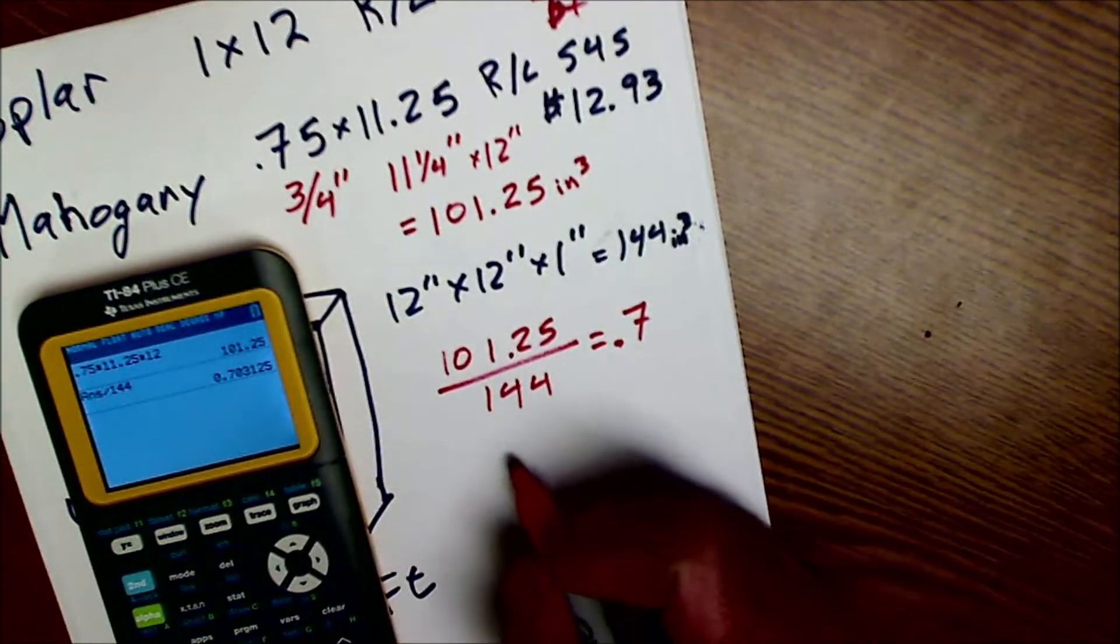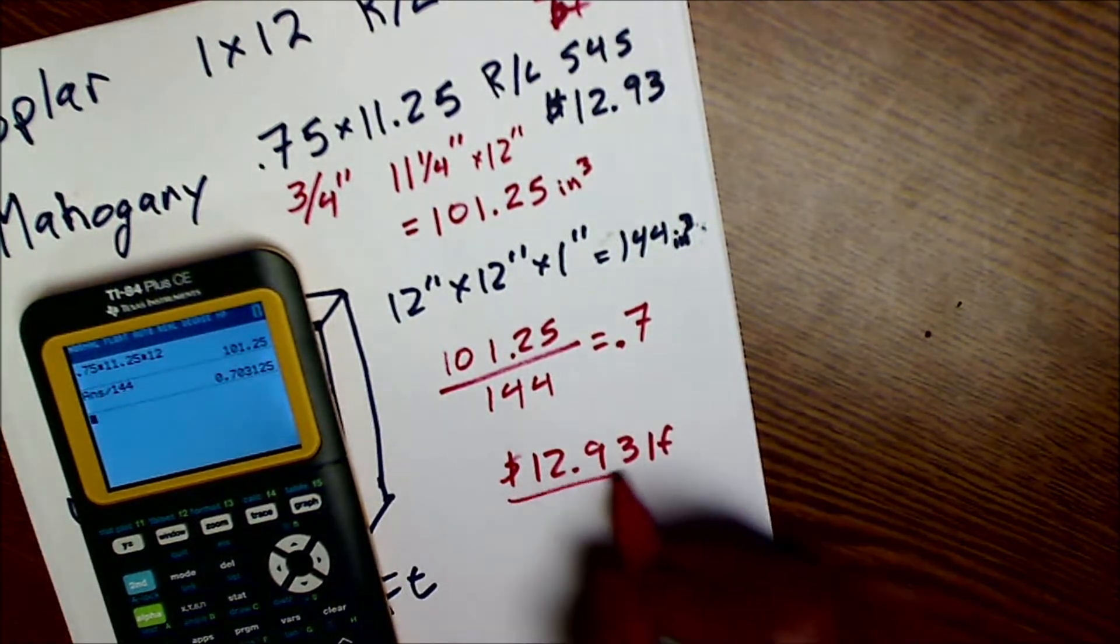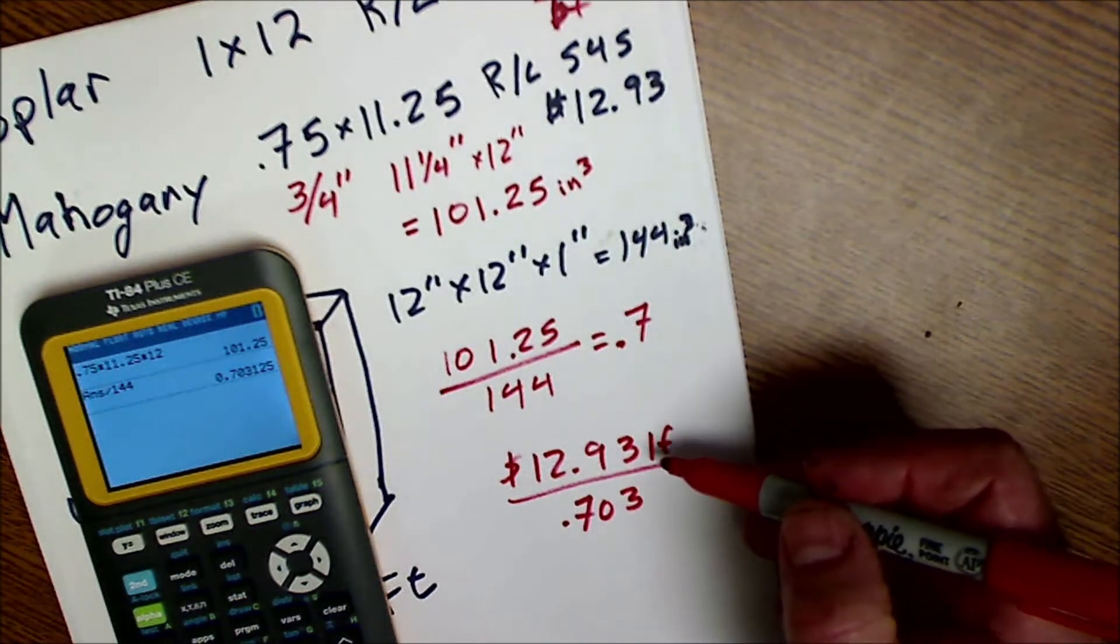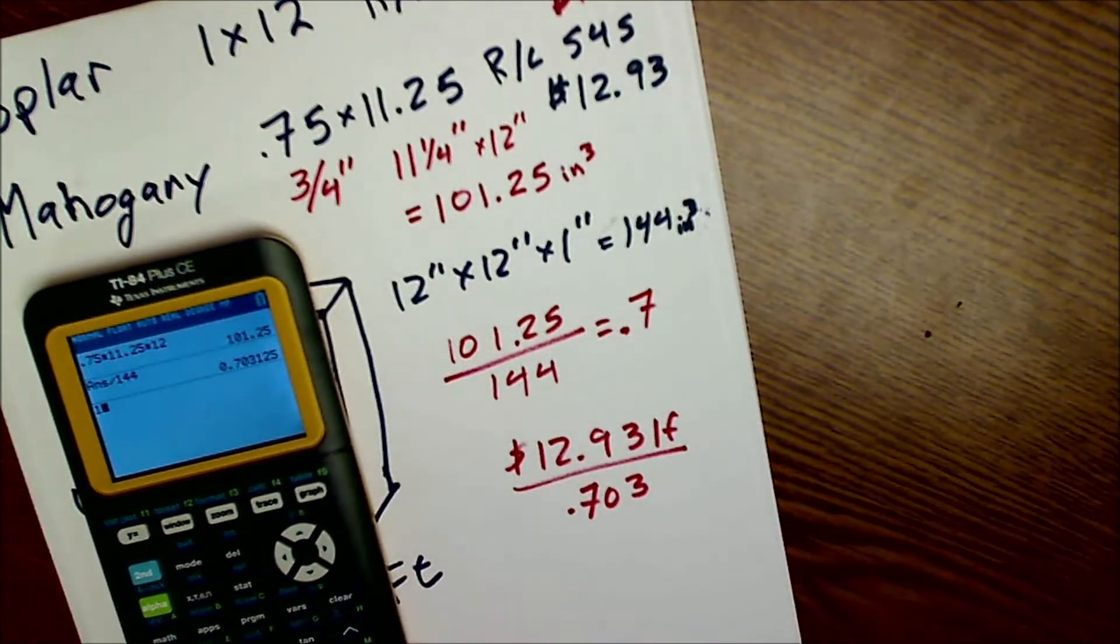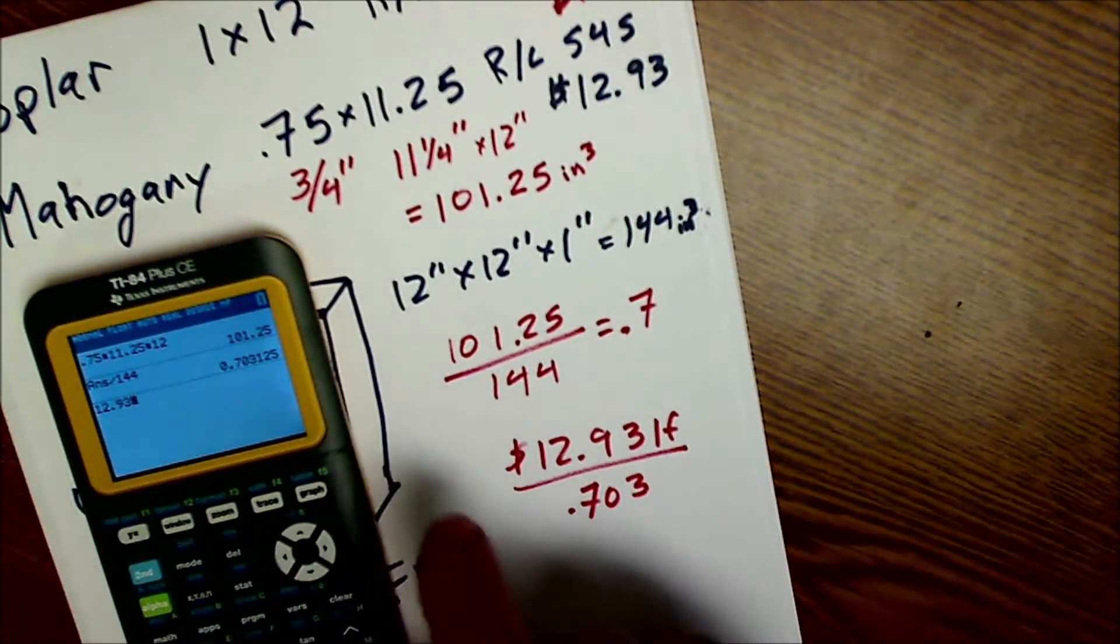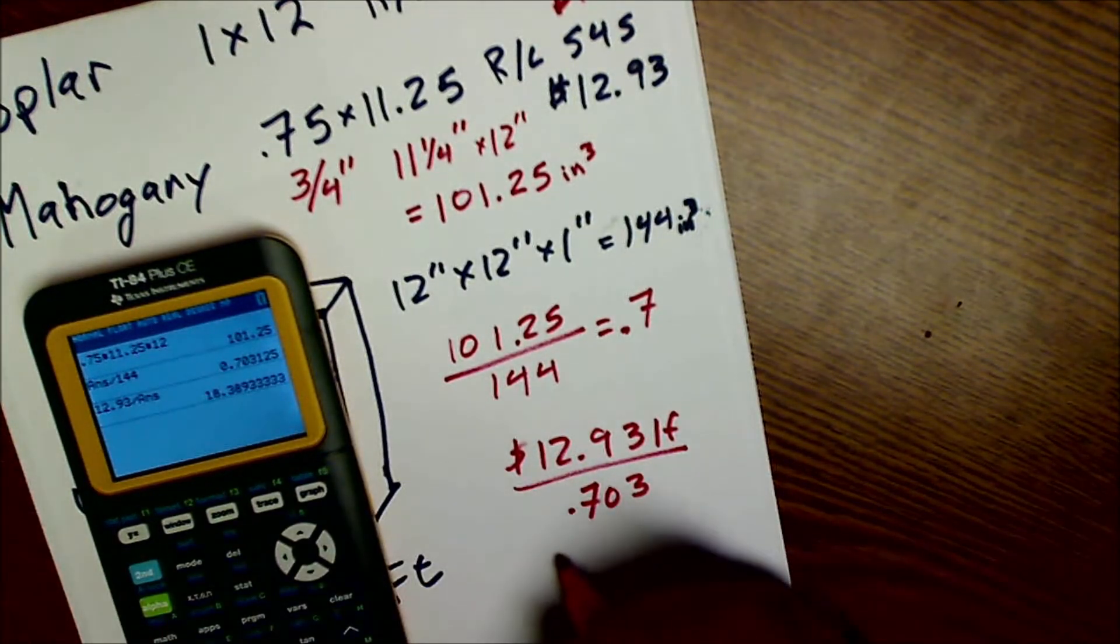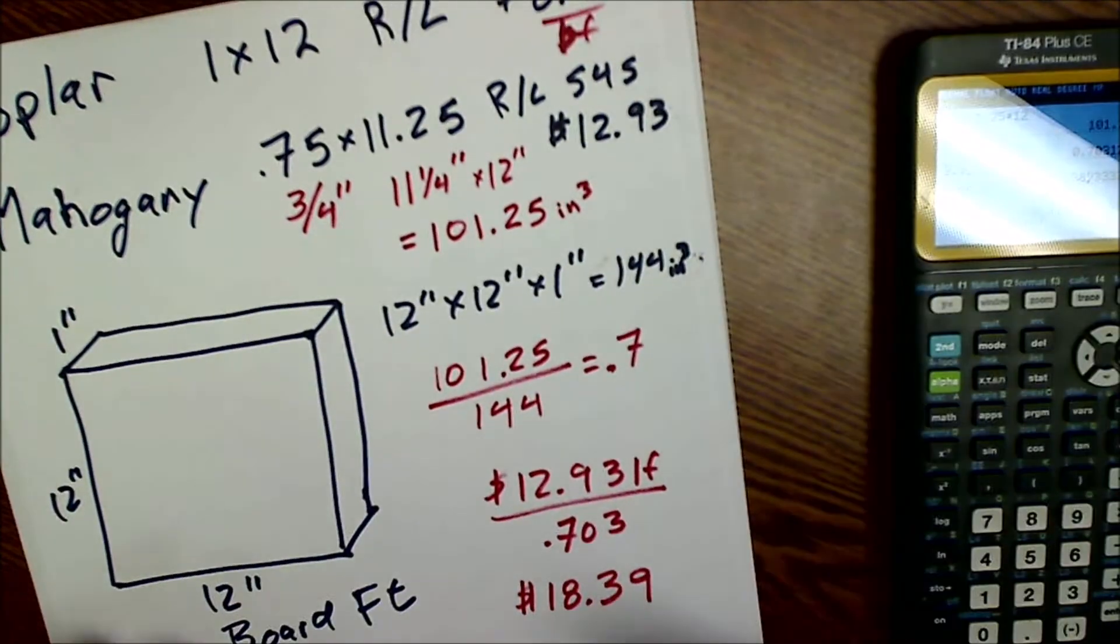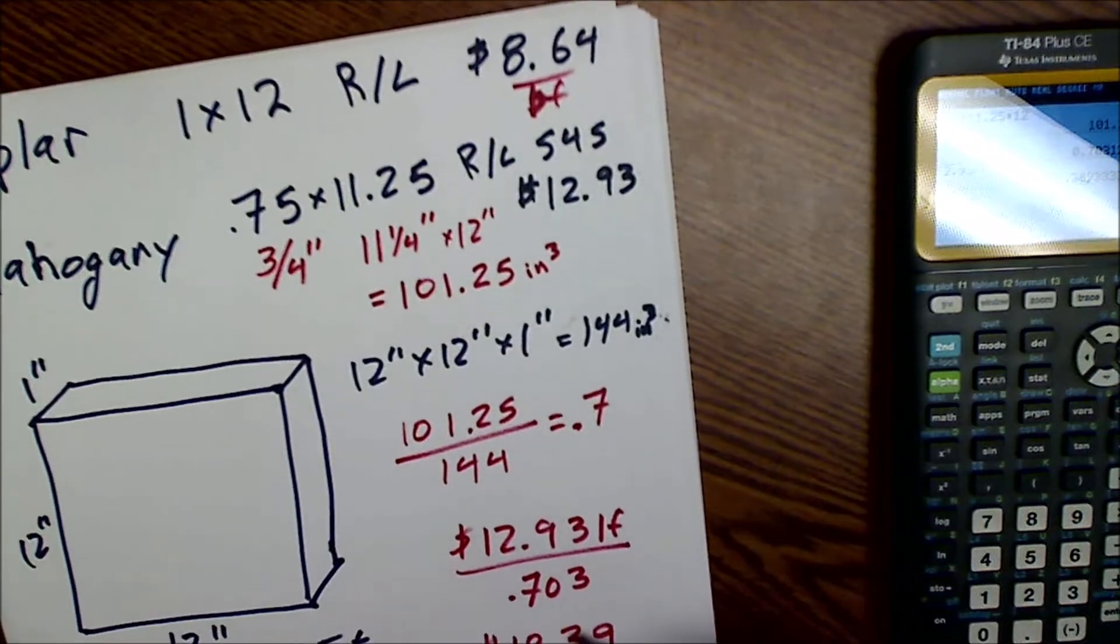So a linear foot is costing me $12.93 per linear foot. If I divide it by how many board feet that is, 0.703, that's going to give me the cost of a board foot. So I'm going to do the 12.93 divided by that answer, and it gives me $18.39. So you can see how expensive that mahogany is. It's $18.39. It's certainly not easy conversion from the linear measurement to the board foot measurement.